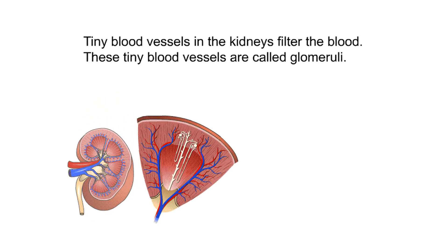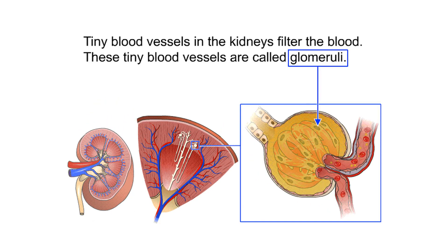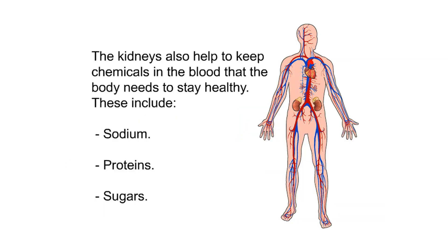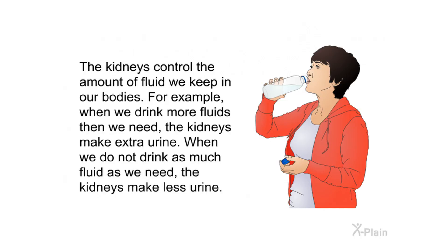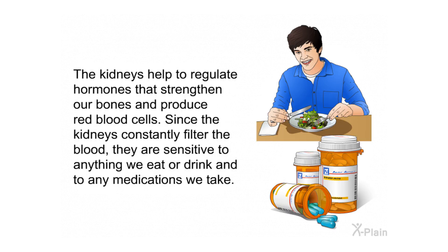Tiny blood vessels in the kidneys called glomeruli filter the blood. The kidneys also help to keep chemicals in the blood that the body needs to stay healthy, including sodium, proteins, and sugars. The kidneys control the amount of fluid we keep in our bodies — when we drink more fluids than we need, the kidneys make extra urine; when we drink less, the kidneys make less urine.